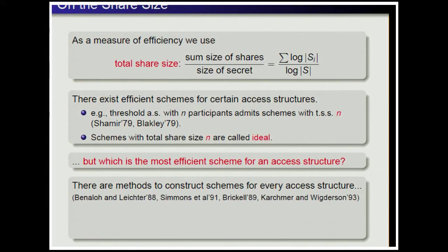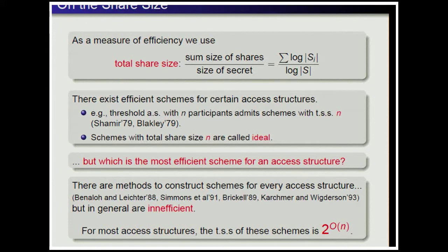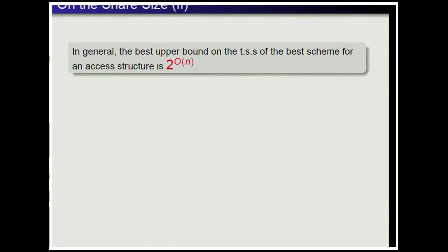There are methods to construct schemes for every access structure, such as those by Benalo, Leicester, Simons et al., Brickel, Kashmir, and Vickerson. But in general these are not efficient: for most access structures, the total share size of schemes constructed by these methods is 2 to the big-O of N. Therefore, the best known upper bound on the total share size for an access structure is 2 to the big-O of N.